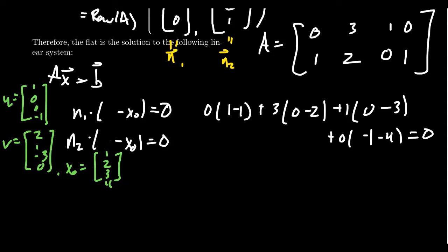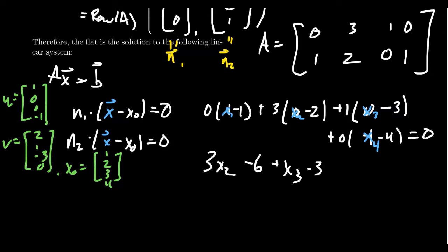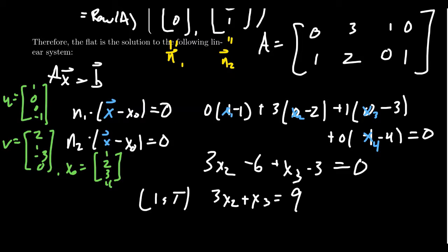We want x to be a generic vector for the plane — x1, x2, x3, x4. When you simplify that equation, you get 3x2 - 6 + x3 - 3 = 0. Moving all constants to the right-hand side gives 3x2 + x3 = 9. This is our first equation in the system, and notice the coefficients of the variables are exactly 0, 3, 1, and 0.